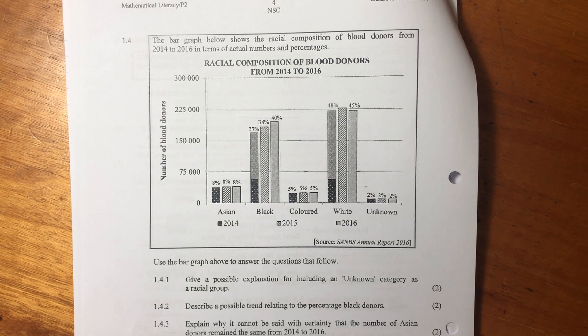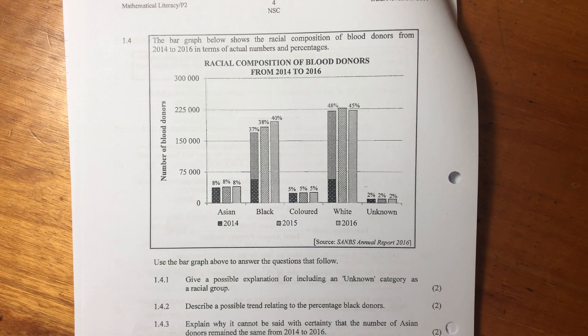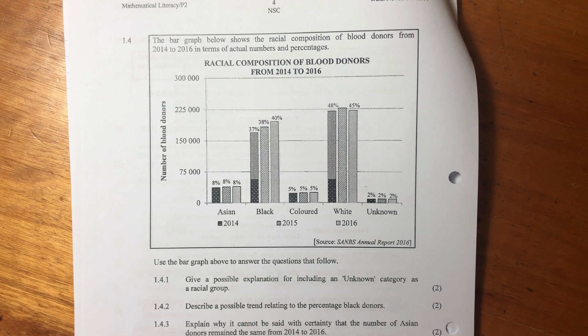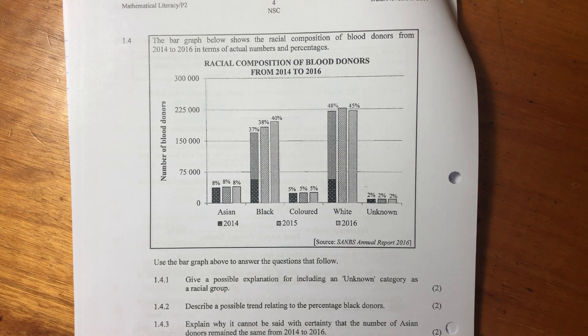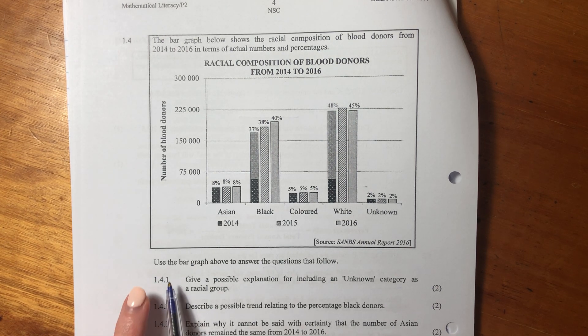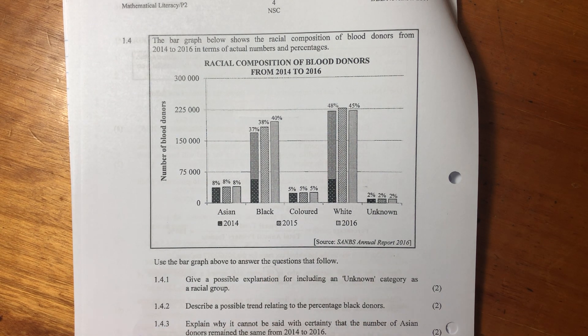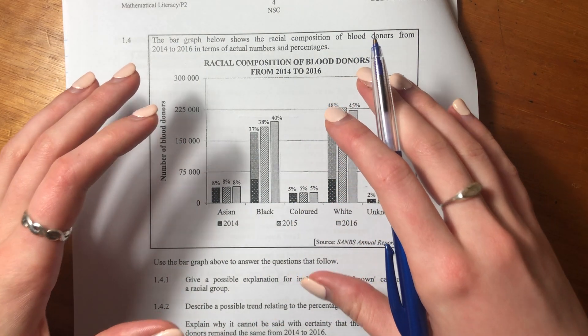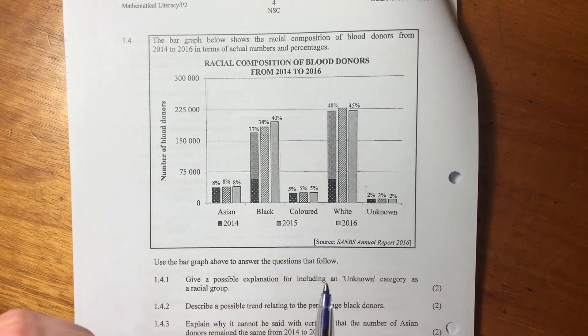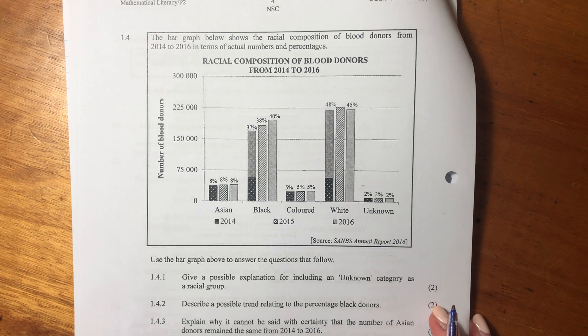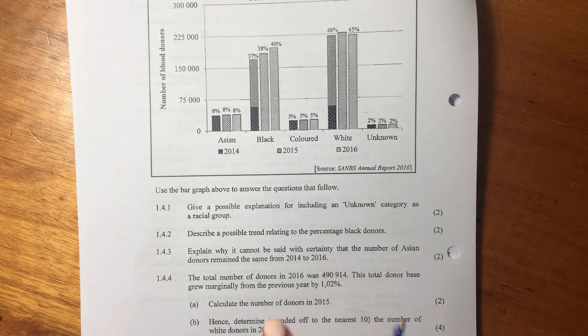Okay guys, let's now look at 1.4. So it says the bar graph below shows the racial composition of blood donors from 2014 to 2016 in terms of actual numbers and percentages. So let's see what it asks us. It says use the bar graph above to answer the questions that follow.